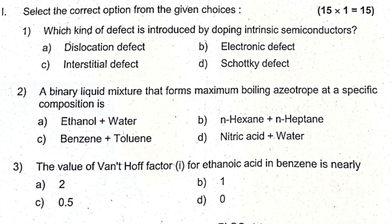The first question: which kind of defect is introduced by doping an intrinsic semiconductor? An intrinsic semiconductor can cause electronic defect. N-type or P-type semiconductor — doping introduces an electronic defect.